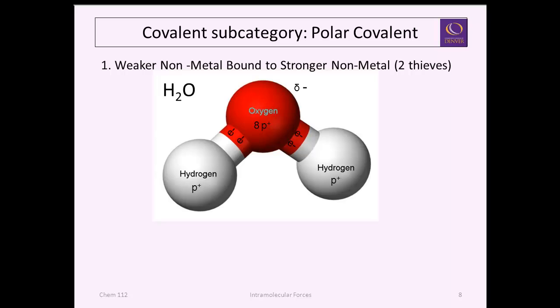That will make the oxygen slightly electronegative. This is not a true anionic charge like in ionic bonding. Then the hydrogen, which has lost electron density, is now partially positively charged. This gives rise to water having what's called poles. It has a negative end and a positive end, hence the name polar covalent bonding.